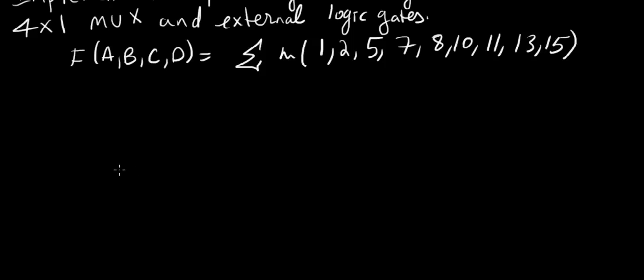A 4x1 mux has one output and four inputs, with two selection lines in order to be able to select one of the four input options.